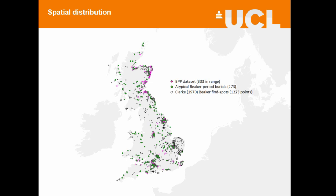There are areas of density that correspond across all the different data sets. However, there are also tantalizing suggestions that some of the atypical burials — particularly those not associated with Beaker period material culture — are occurring in regions outside the key areas of Beaker material culture presence. So while we're not suggesting these are areas rejecting the Beaker phenomenon or outside its sphere of influence, there is a strong possibility that there are regional variations in what was deemed appropriate in terms of burial practices. We see regional variations in pretty much all the different burial practices, which get blurred out when you're just looking at this one typological norm.